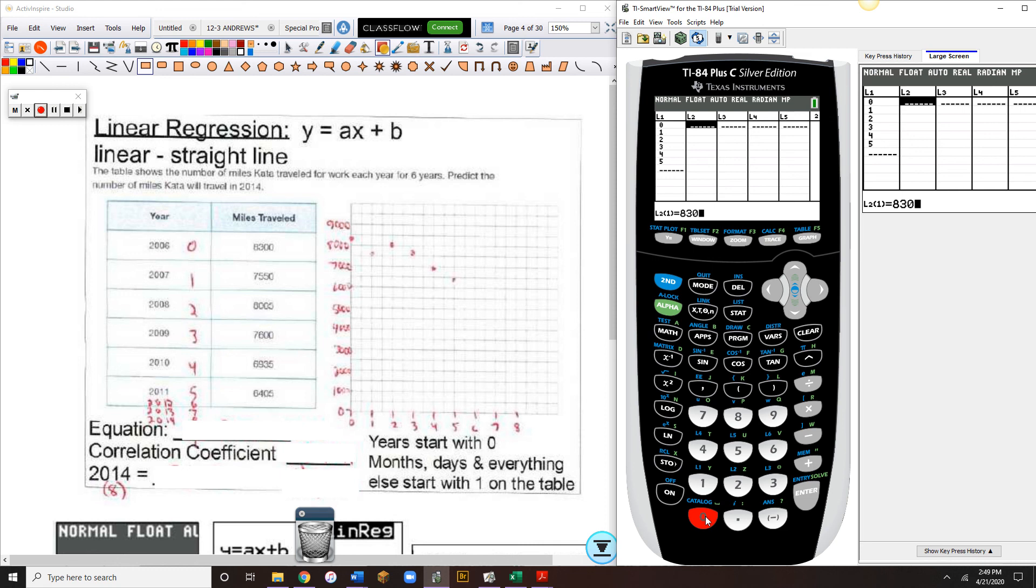8,300. 7,550. 8,005. 7,600. 6,935. 6,405. So we have all of our data in.